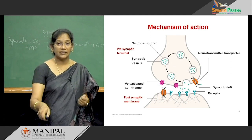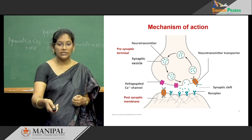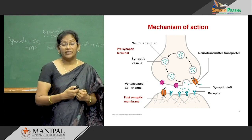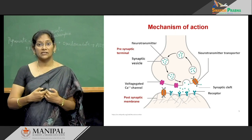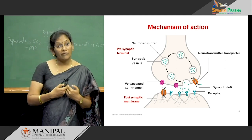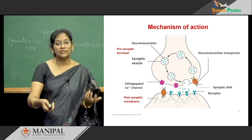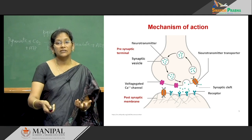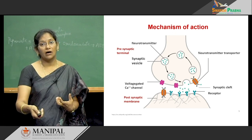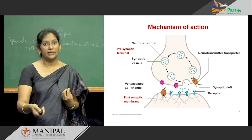Once the neurotransmitters are released into the synaptic cleft, they will go and bind to the receptors present on the postsynaptic membrane. Once binding occurs with the synaptic receptors on the postsynaptic membrane, the message will be transferred. There will be repeated action potentials and repeated release of the neurotransmitters and binding with the receptor, so the chemical message will be passed on to the target cell.